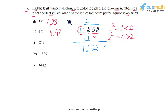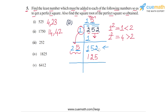For the divisor of the second step, we double 1 to get 2. We find the largest digit to place next to 2 such that the product is ≤ 152. That digit is 5, because 25 × 5 = 125. If we had taken 6, then 26 × 6 would exceed 152. Subtracting: 152 − 125 = 27. There are no more digits, so division stops. We get a quotient of 15 and a remainder of 27.